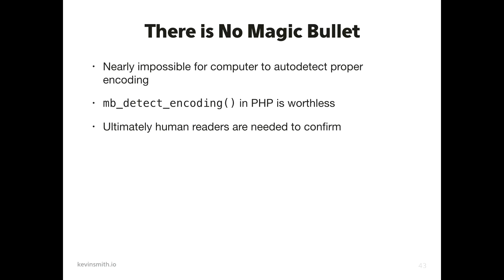Ultimately, what you need is humans to read the output after you've tried to determine encoding. Take the ones and zeros, decode with a certain encoding, and let a human who is knowledgeable in that area — a subject matter expert — read it and determine: does this largely make sense, or are there just gnarly digits somewhere? There's no magic bullet; ultimately you need to investigate to figure out what happened and sort of try to reverse-engineer it.